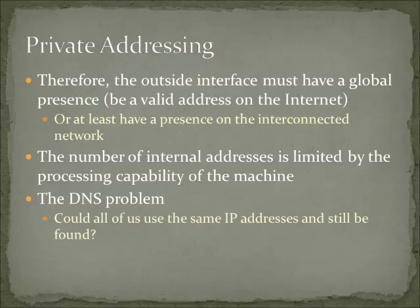The outside interface has to have a global presence. In our example later on, we're going to show you that that's not exactly the case. The important thing is that you've got a private network on the inside, and then the addresses are changing to an address on the outside of your router. Typically, as we do in most small office/home office networks, the outside interface of the router has a globally unique public address. But you can run a NAT machine behind a NAT machine behind a NAT machine if you really want to. Remember that when you're private addressing, those are not going to appear in the public DNS.